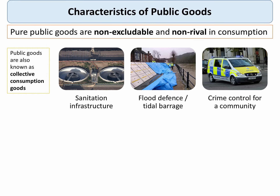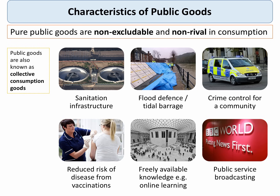Here are a few examples of public goods. Sanitation infrastructure provides a public good to the whole community. Flood defences or tidal barrages provide collective consumption products. Peace of mind from having an effective police force is a public good. The spillover effect from having sufficient numbers of people vaccinated against particular diseases is also a public good. In today's world, masses of information and courses are made freely available — non-excludable and non-rival in consumption — for example, massive open online courses, or MOOCs. Public service broadcasting, such as the BBC's World Service, is also a really good example of a public good.